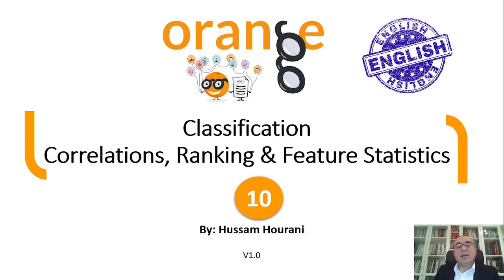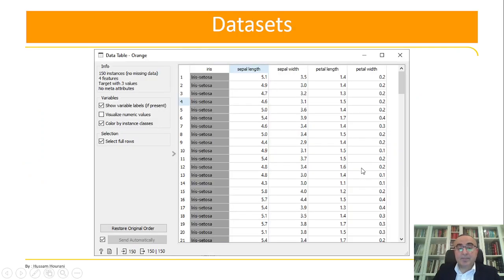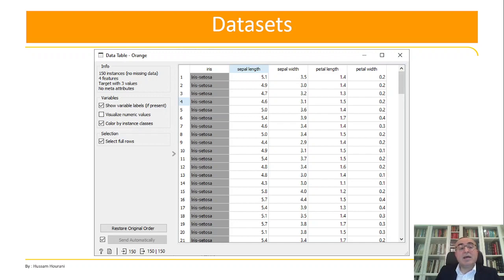Hello, this is Hussan Hhorani again. Today we will talk about a very important topic which is correlations, ranking, and feature statistics. The simple question is: if we have a dataset — for example the iris dataset — how can we really know which are the most important features, and which features are the least important? Do we have pairs of columns or attributes that play a key role in classification, to identify whether a flower is Setosa, Virginica, or Versicolor?